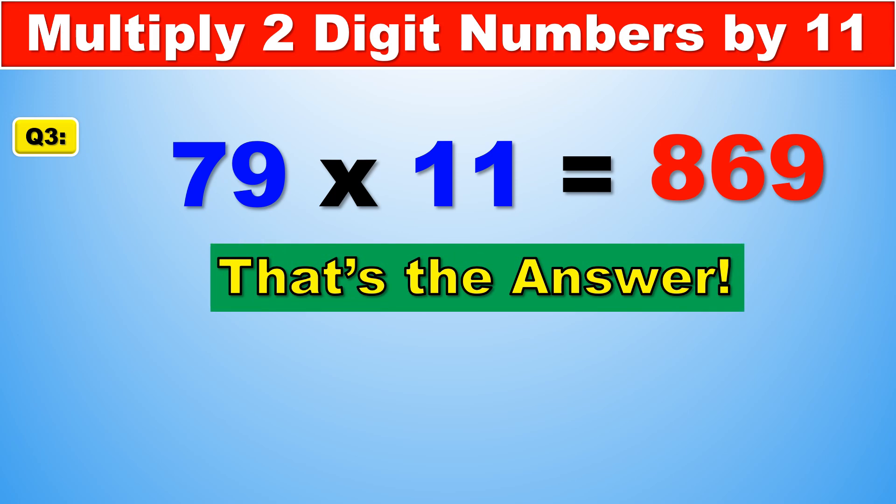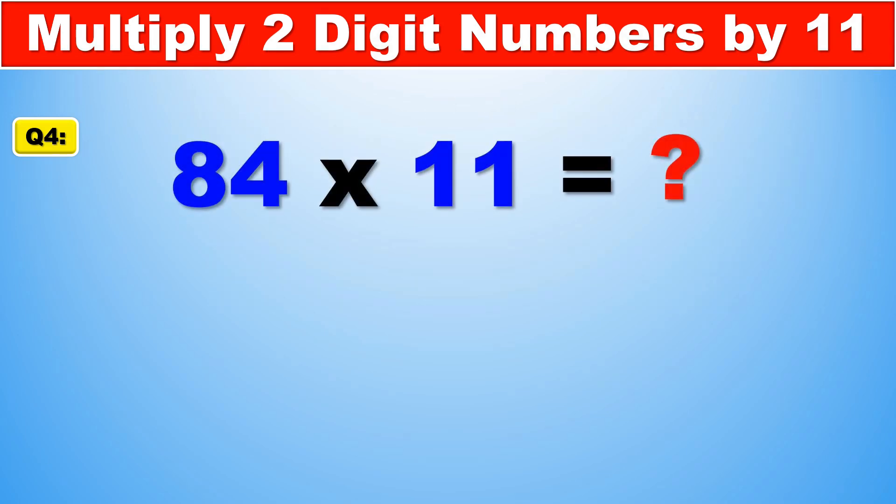Now let's look at one final example. And this brings us back to the start of the video. 84 times 11. Now, using the tricks that you've learned so far, you should be able to figure out that 84 times 11 is another carryover. So you have 8 at the beginning, 4 at the end.